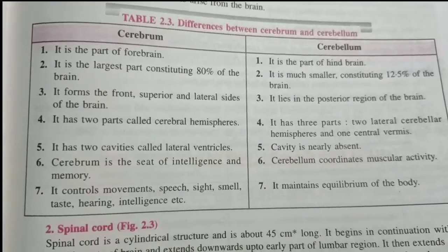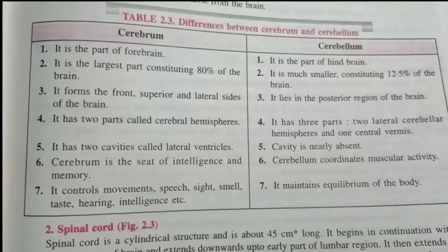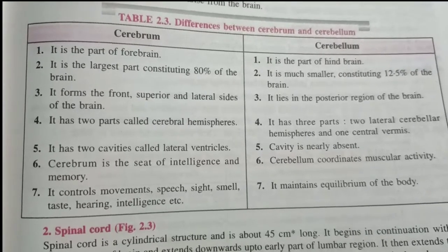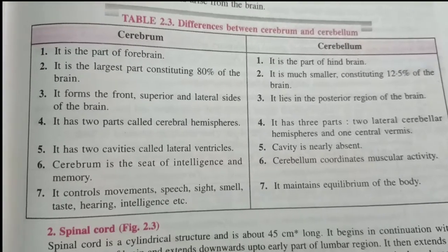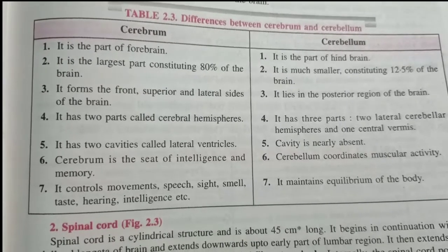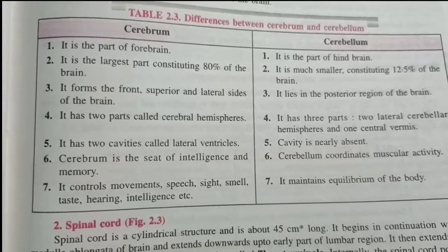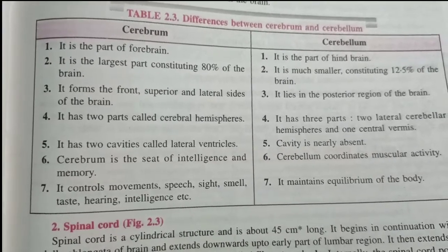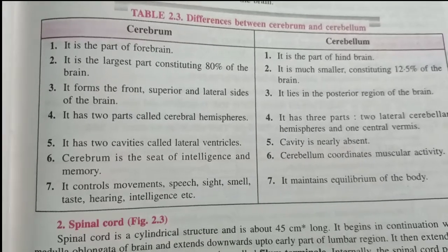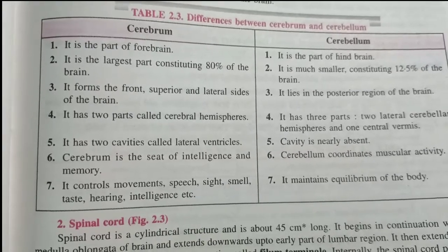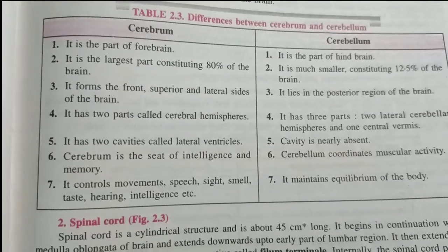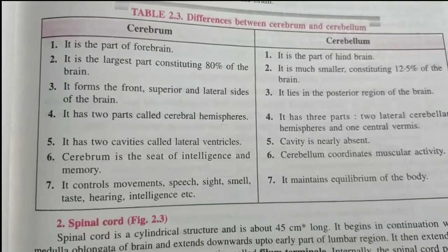Cerebrum is the largest part, constituting 80% of the brain. Cerebellum is much smaller, constituting 12.5% of the brain. Cerebrum forms the front, superior, lateral side of the brain, while Cerebellum lies in the posterior region of the brain.